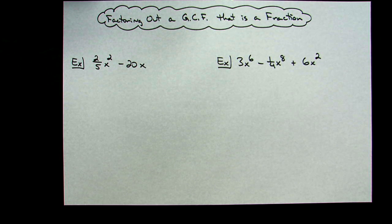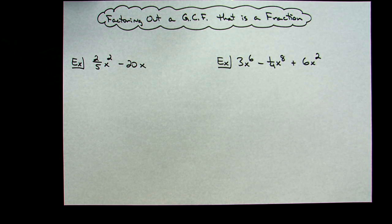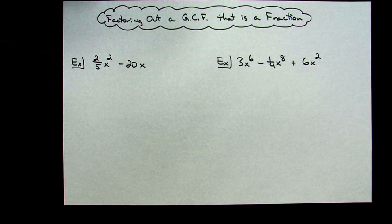Today we're going to take a look at factoring out a greatest common factor that turns out to be a fraction. This is a really unique thing, but if you do run across it, you really need to have a strategy for this.